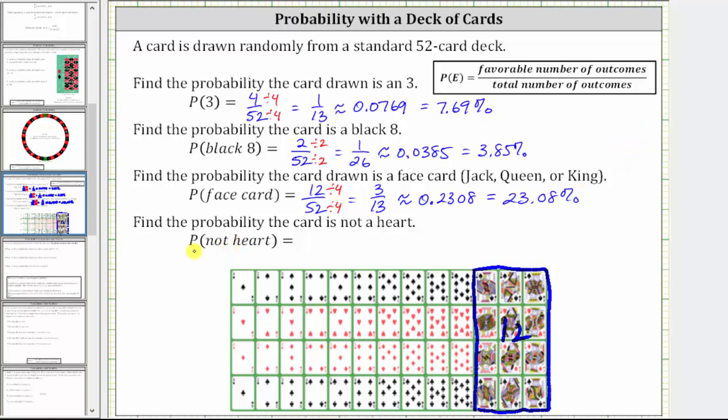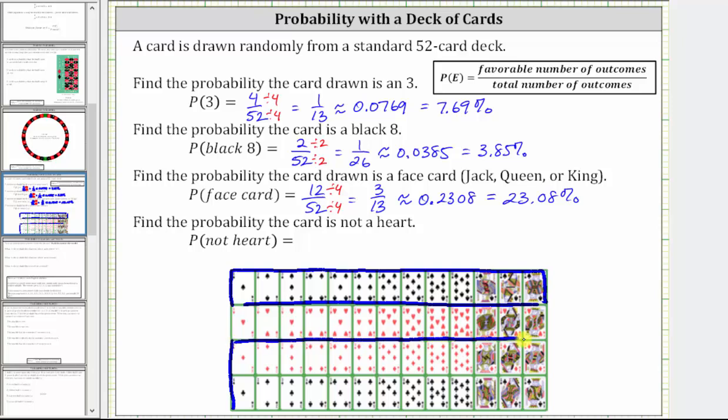For the last example, we're asked to find the probability the card is not a heart. The hearts are in this row here, so all the other cards are favorable outcomes. We have 13 favorable outcomes with the spades, 13 with the diamonds, and 13 more with the clubs, giving a total of 39 favorable outcomes, or 39 cards that are not hearts.